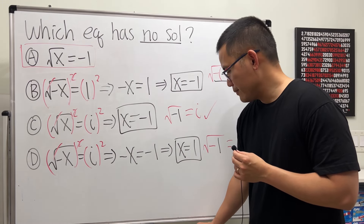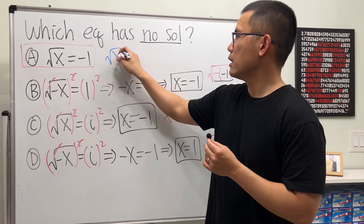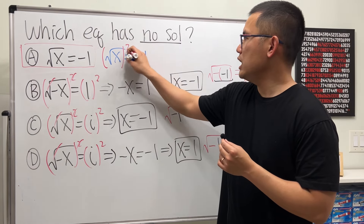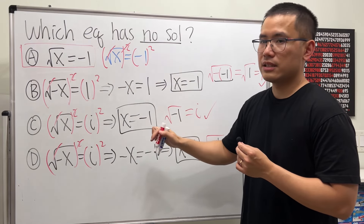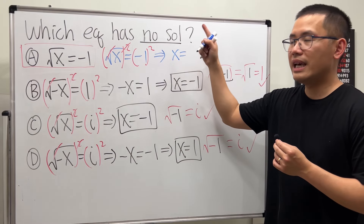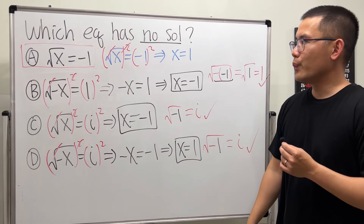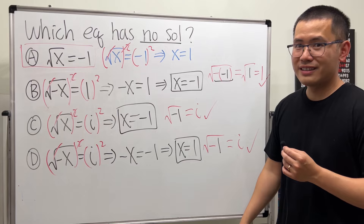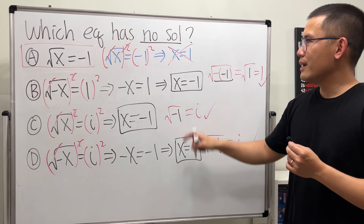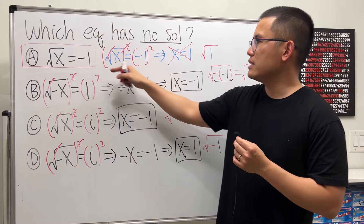Now let's go back to equation A: square root of x equals negative 1. Why not just square both sides? If we do, the square root cancels and we get x equals negative 1 times negative 1, which is positive 1. But the answer x equals 1 does not work — you have to cross that out. If you plug 1 in, you get square root of 1, and we're claiming that equals negative 1.